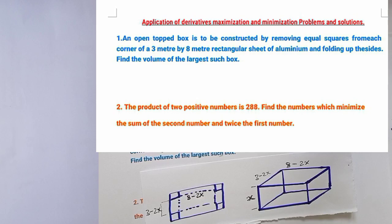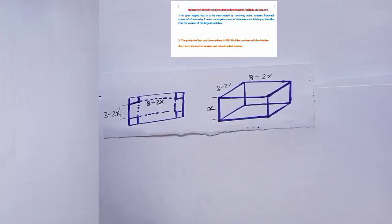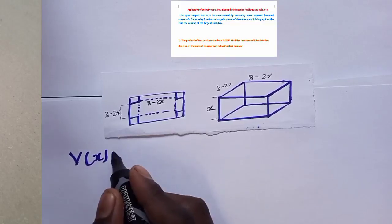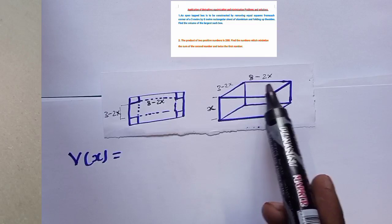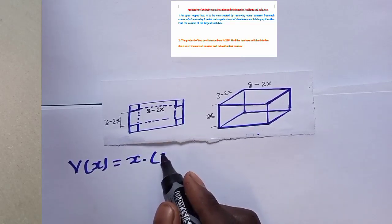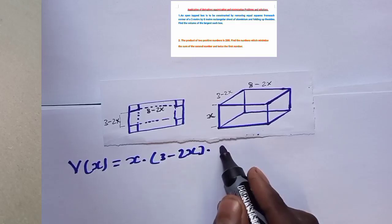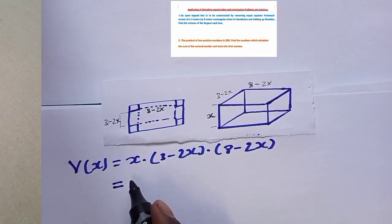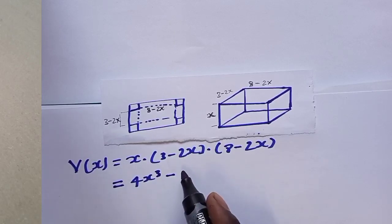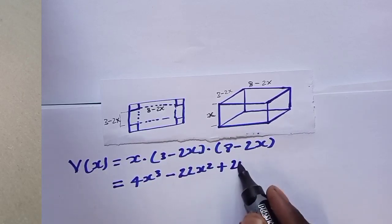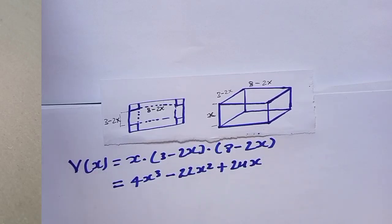You should remember the volume of a rectangular box, which is width times length times height. The volume is x times (3 minus 2x) times (8 minus 2x), which expands to 4x³ minus 22x² plus 24x.